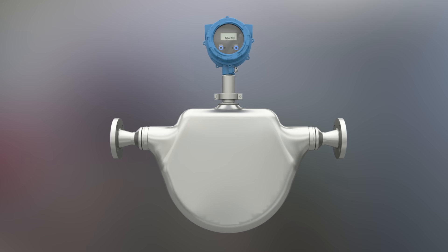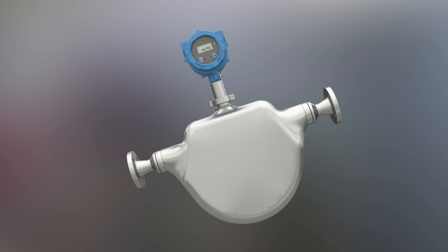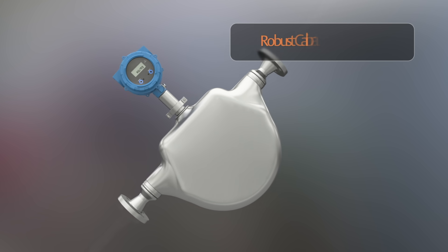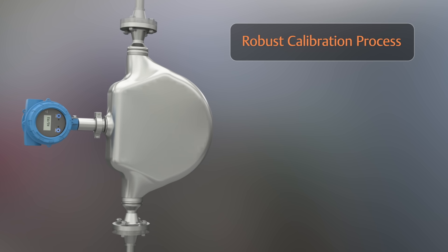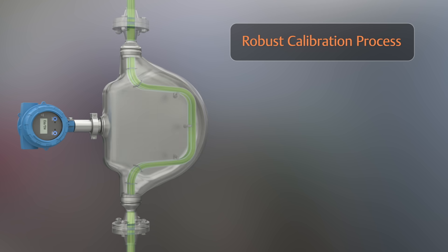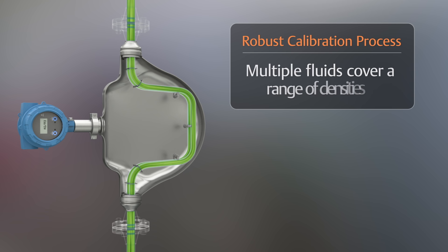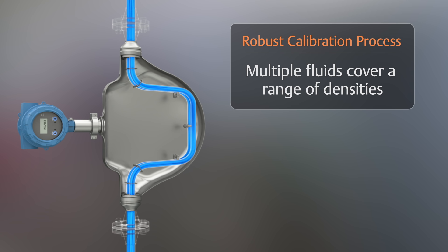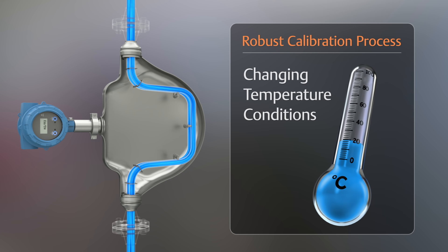Let's look at how this is measured using a robust accredited calibration process. The Compact Density Meter is calibrated using multiple fluids to cover a range of densities and to ensure a linear response. The meter is also calibrated for temperature, starting at room temperature and then at elevated temperatures.